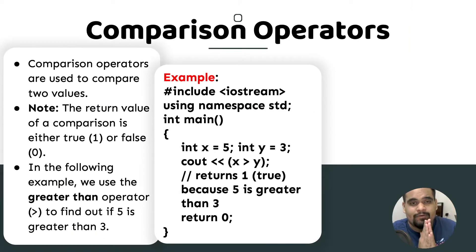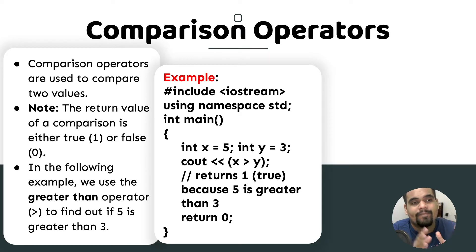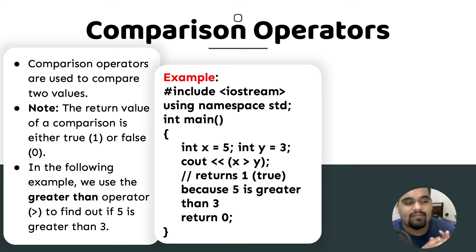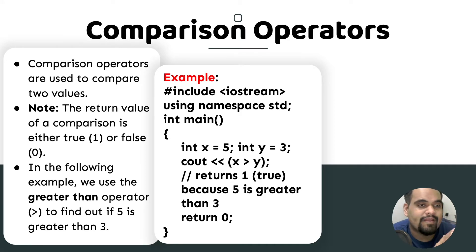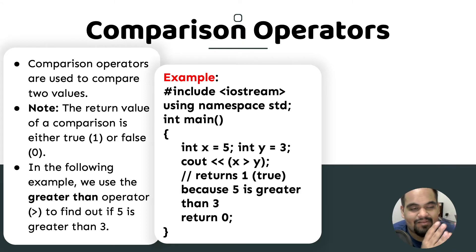Comparison operators are used to compare two variables. Whenever you want to compare something, you use comparison operators. The return value of a comparison is either 1 or 0 — when you compare things, either they are similar or they're not similar, as simple as that.